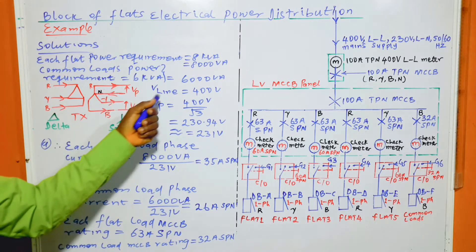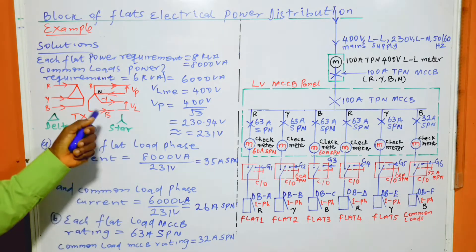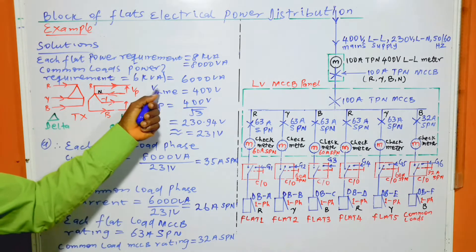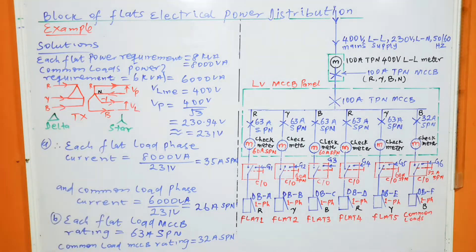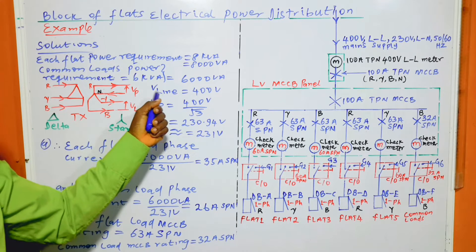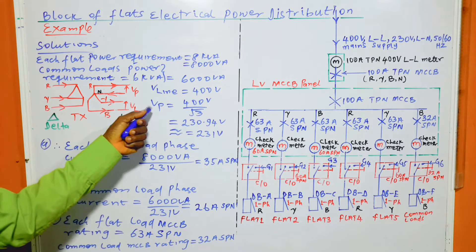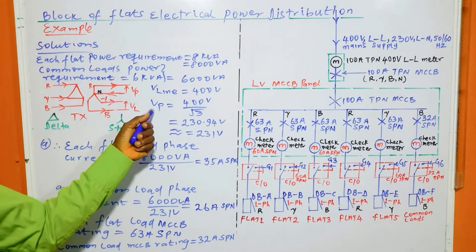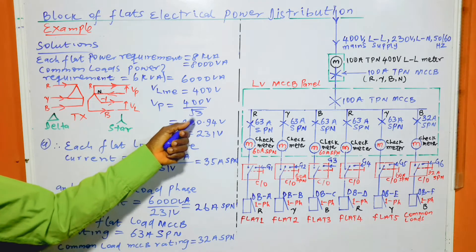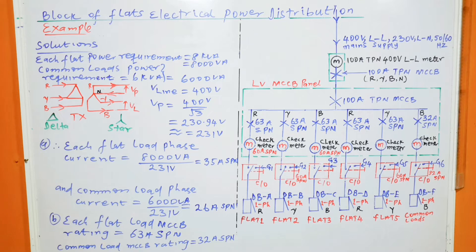The voltage between the neutral and the line is called phase voltage, and the voltage between two lines is the line voltage. Given that the line voltage is 400 volts, we calculate the phase voltage to be 400 volts divided by root 3, giving us approximately 231 volts.